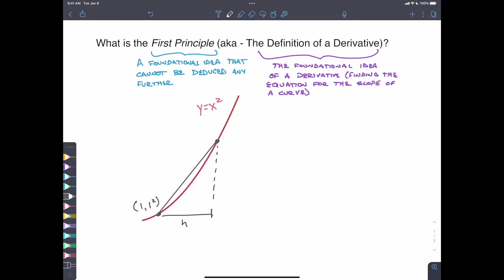So we'll call this distance h. So this point up here would be one plus h, right? So if this is the coordinate of one, one, then as we move over here, this is going to be one plus whatever that distance is. So that means the y value is going to be one plus that distance squared. So there we've got our second point.